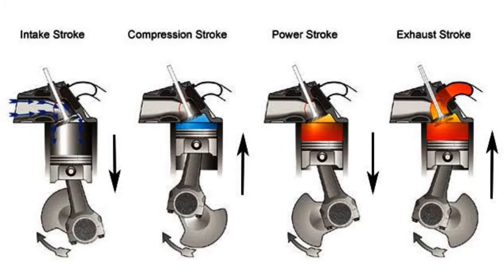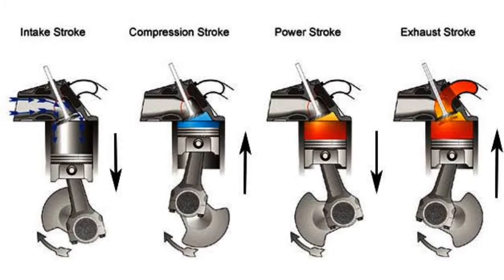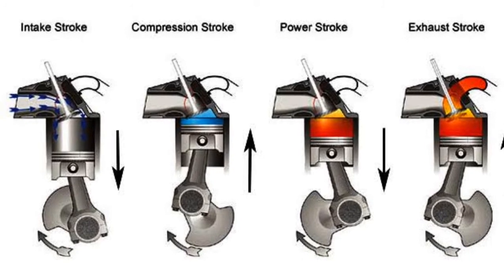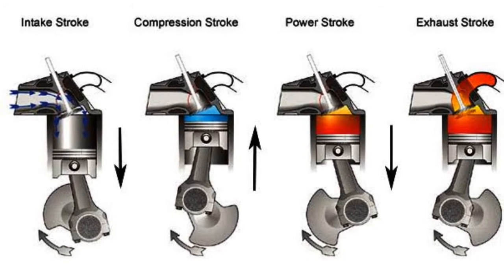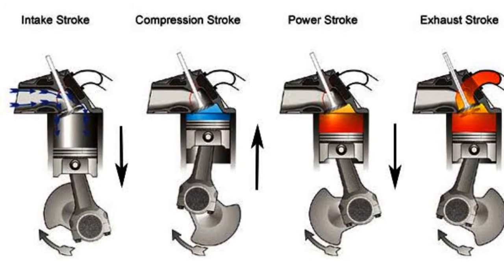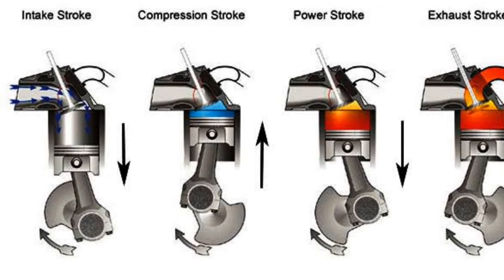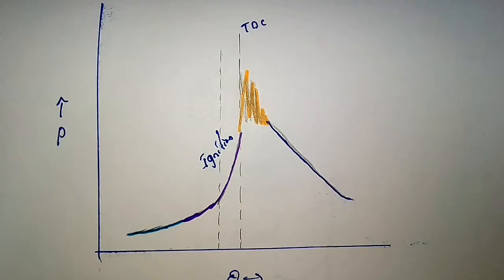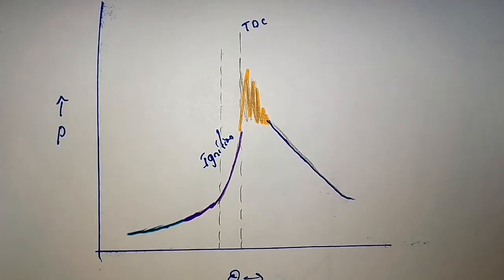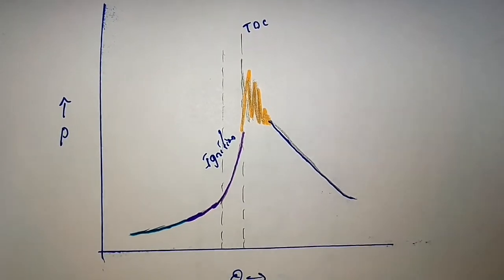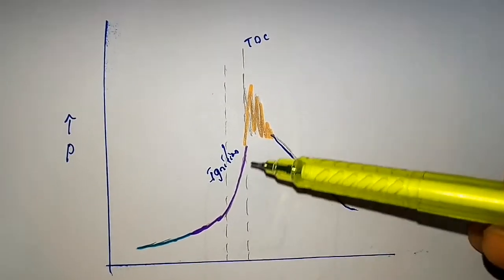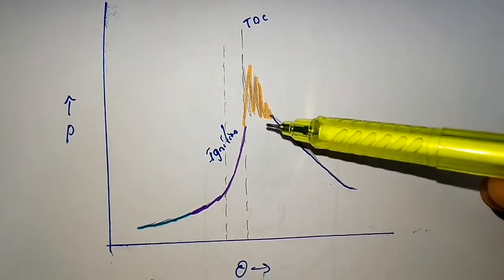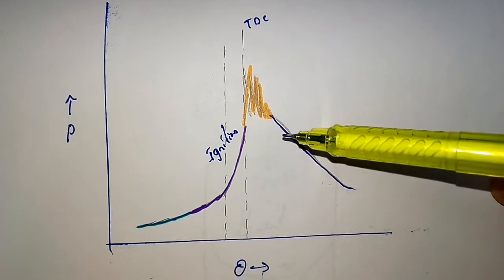Similar to the SI engine, the burnt gases are taken out through the exhaust valve, which is the last stroke in diesel engines too. This is the P-V diagram of a spark ignition engine showing knocking occurring in a spark ignition, or petrol, engine.